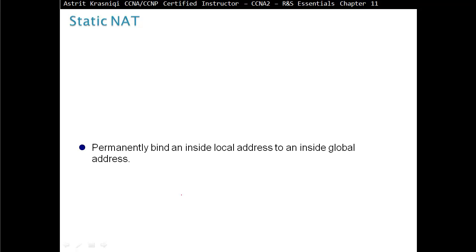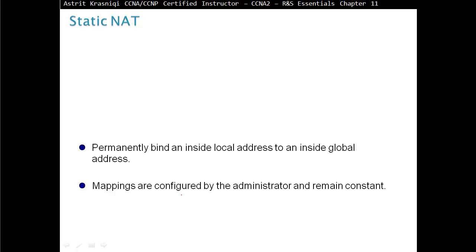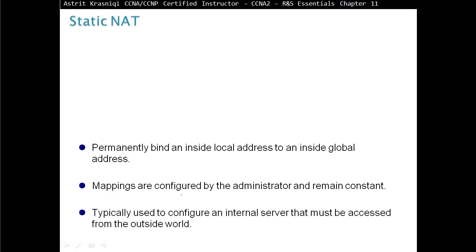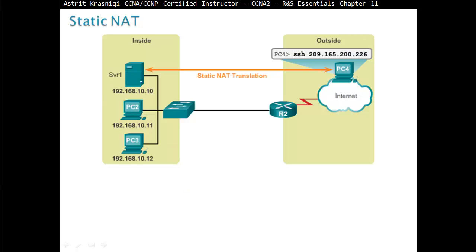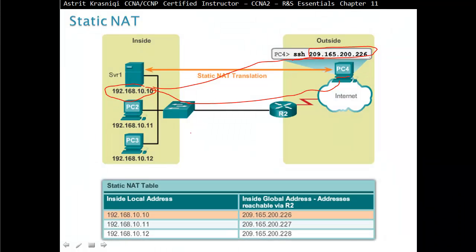Static NAT permanently binds an inside local address to an inside global address. Mappings are configured by an administrator and they will remain constant. It is typically used to configure an internal server that must be accessed from the outside world. For example, here we have a server at 192.168.10.10 and this server's IP address will be translated into 209.165.200.226. If we are on the internet at PC4 doing SSH to the server, it will go through the router to the server. This is a one-to-one mapping and it does not reduce the number of IPv4 addresses needed, but it is good for servers.